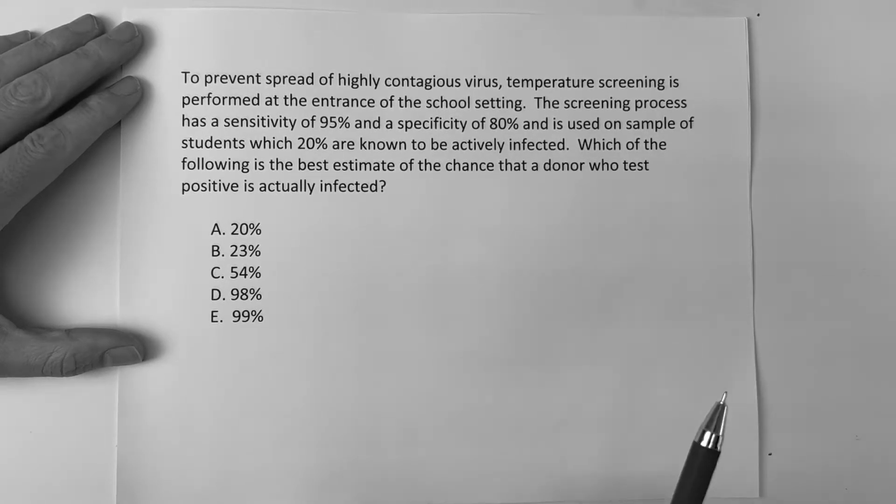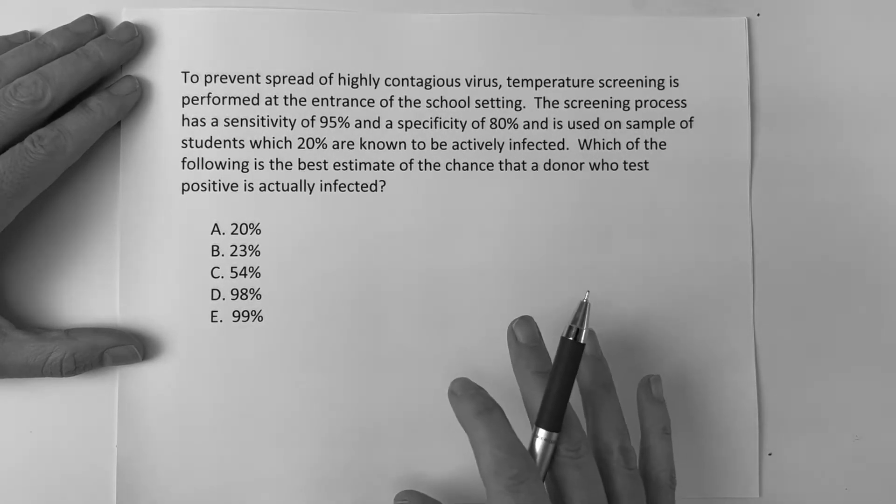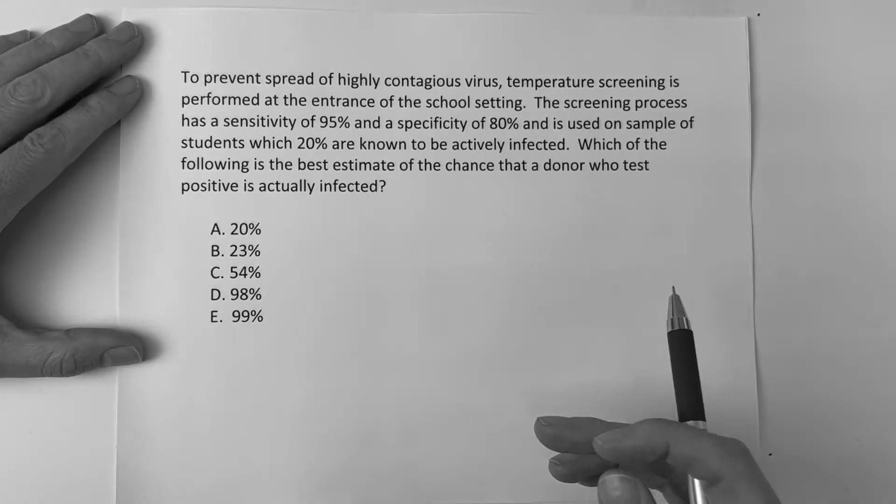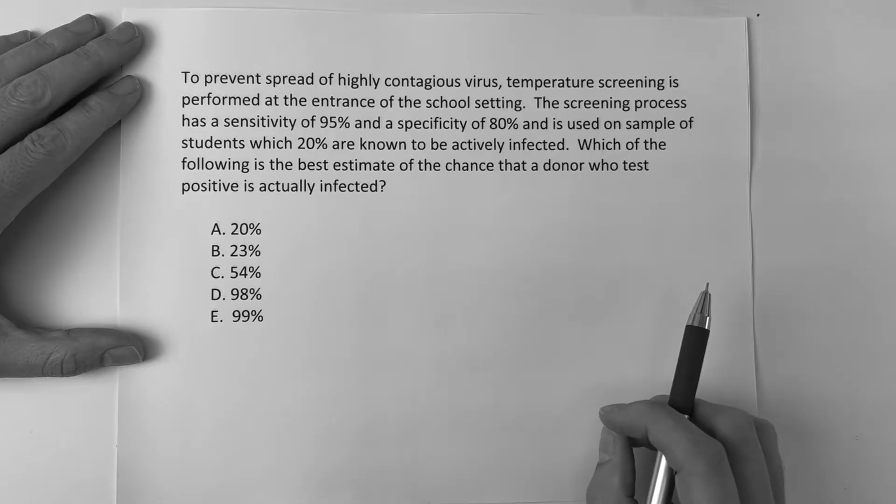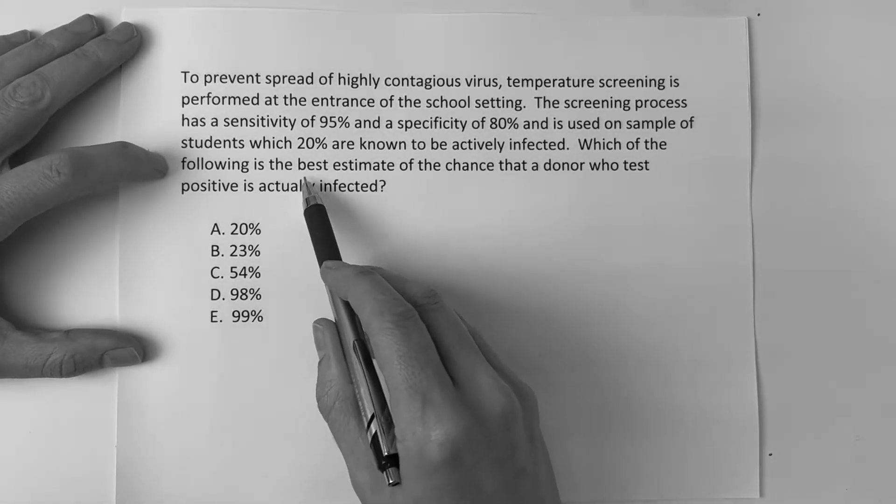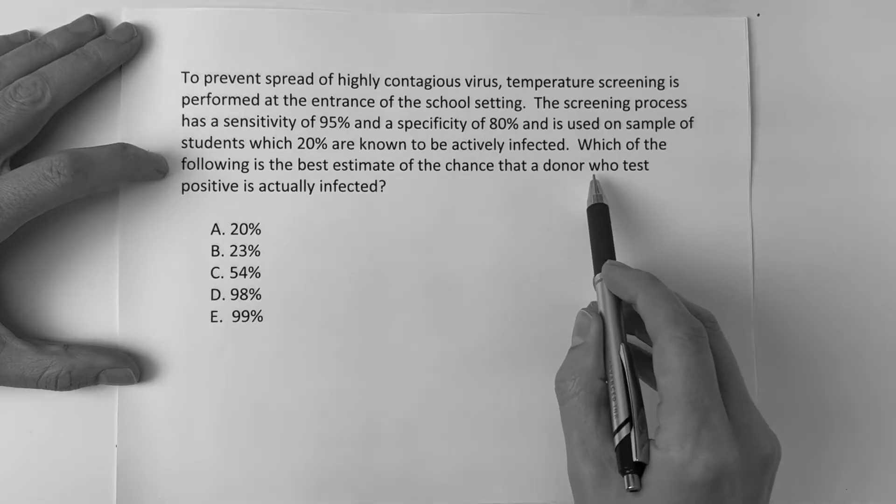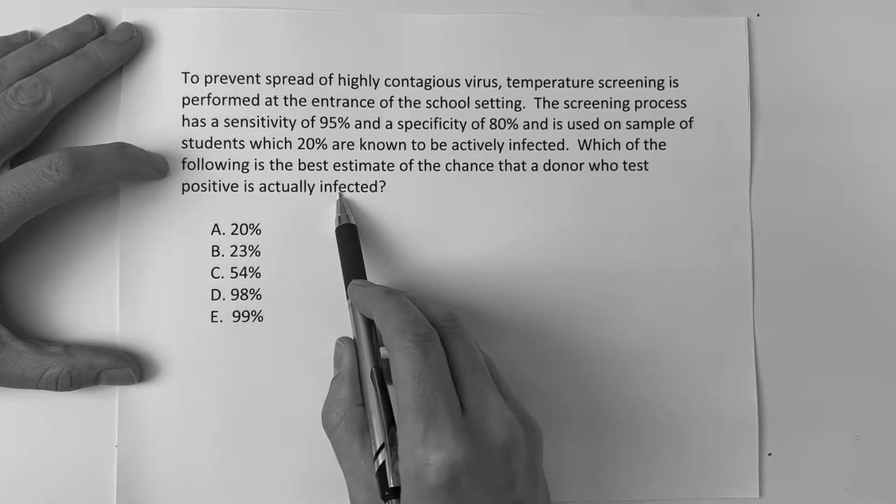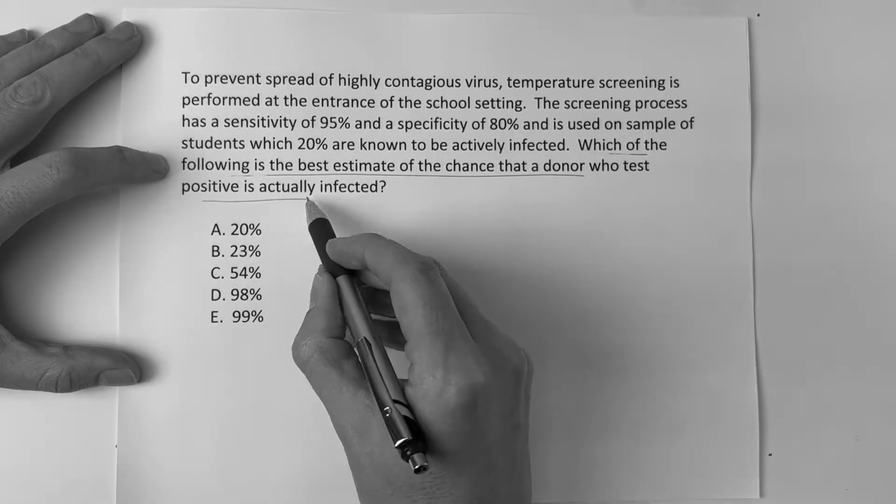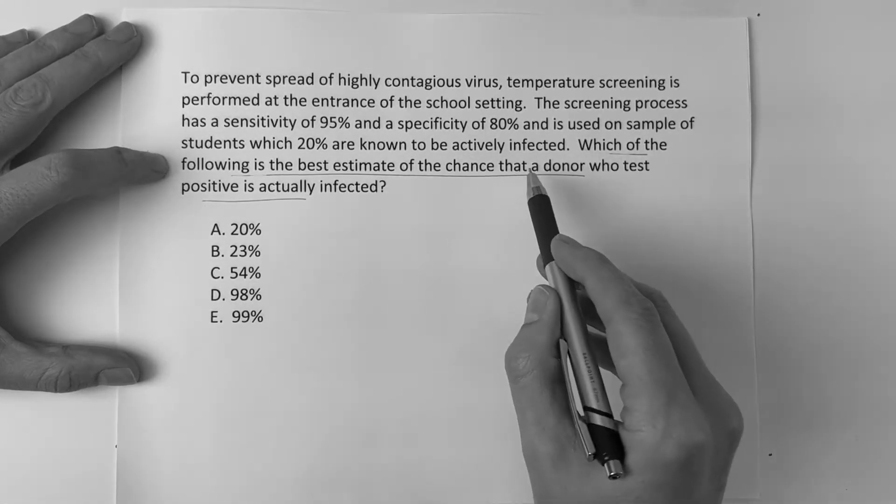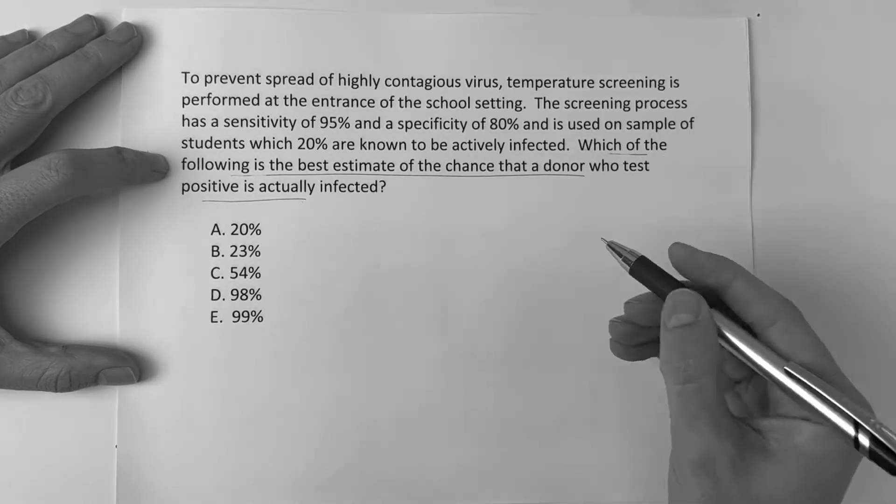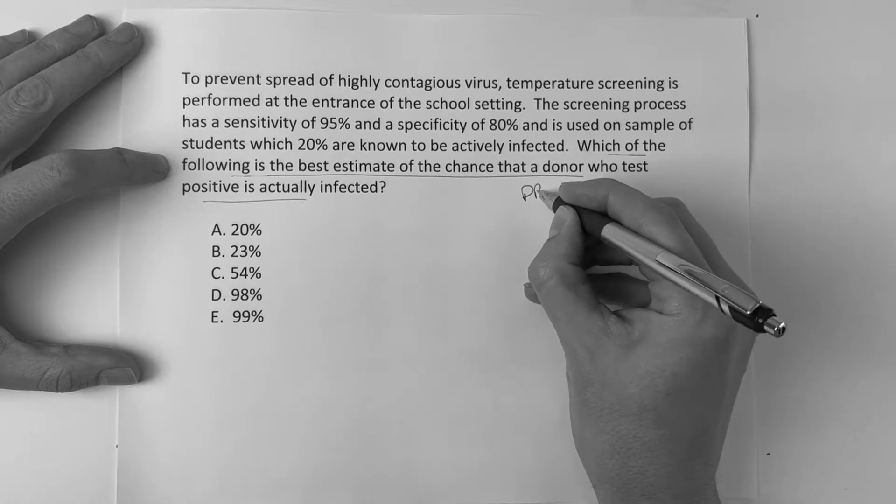Alright guys, so this was a question that was kind of inspired by a question that someone had sent to me asking to solve it. We changed some things around, and so here it goes. It says, which of the following is the best estimate of the chance a donor who tests positive is actually infected? Now, right away, you're thinking, okay, I understand this, right? Because they're saying someone who tests positive is actually positive for the test or the disease. And so you can tell they're asking for positive predictive value.